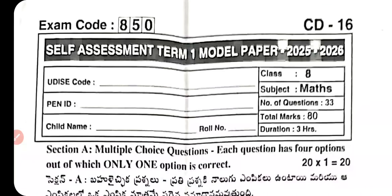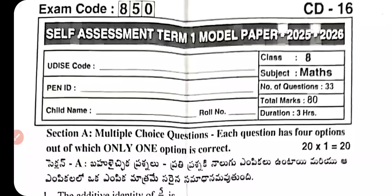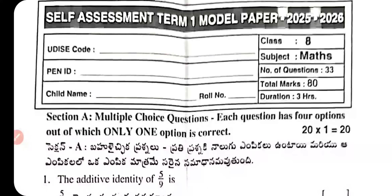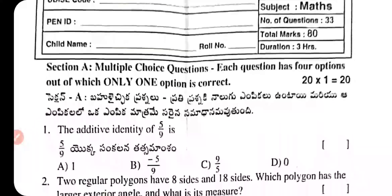Hello everyone. In this video, we discuss the self-assessment Term 1 model paper essay 1, 2025-26, Class 8th, subject Mathematics question paper with solution. The solution key download link is on the Telegram group in the description. Follow the link, like and share, and subscribe to the channel. Section A: Multiple Choice Questions — each question has four options, out of which only one option is correct.